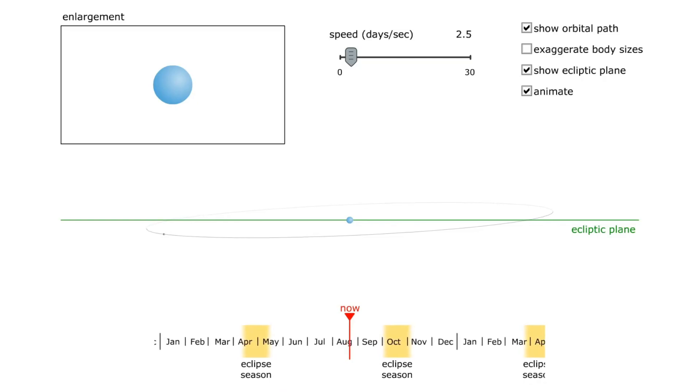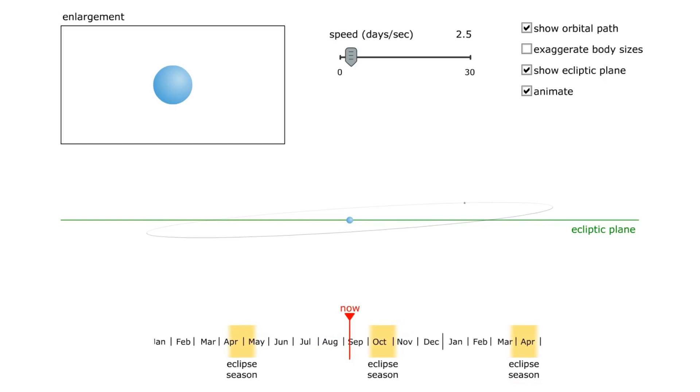This computer simulation shows a correctly scaled Earth-Moon system as seen from the Sun. Note that the Moon is typically too far above the plane of the ecliptic to pass through the shadow of Earth, or too far below the plane of the ecliptic for the Moon's shadow to hit Earth. We are now in between eclipse seasons.